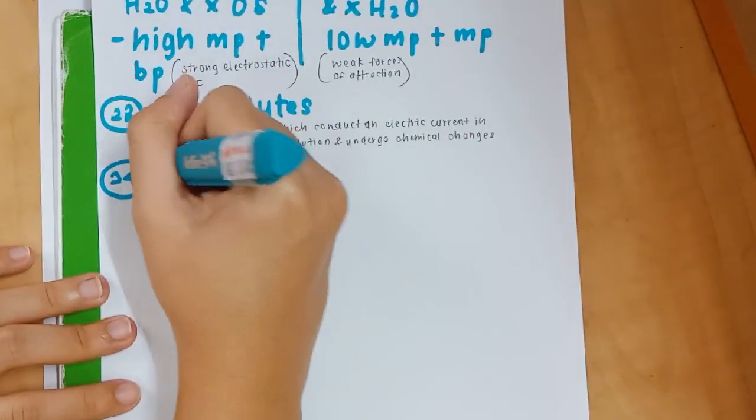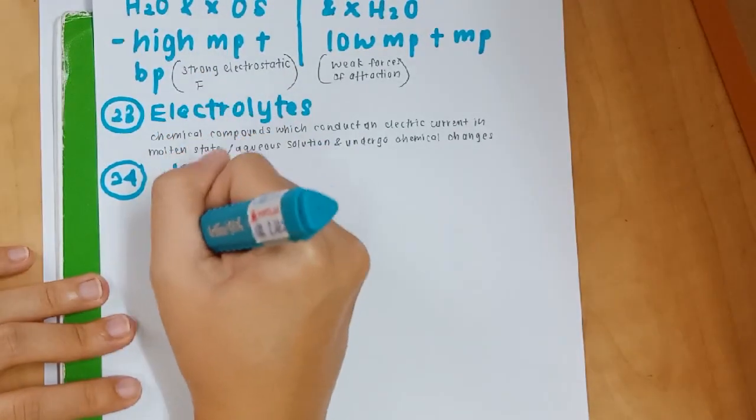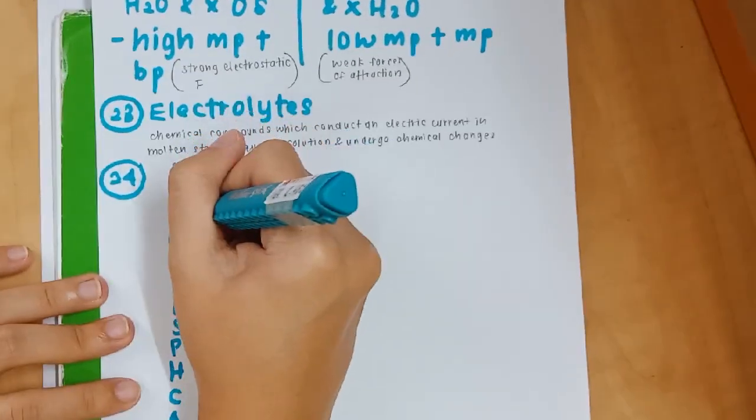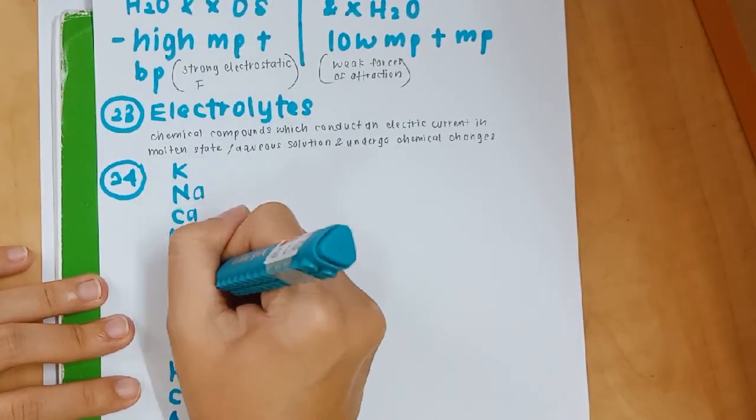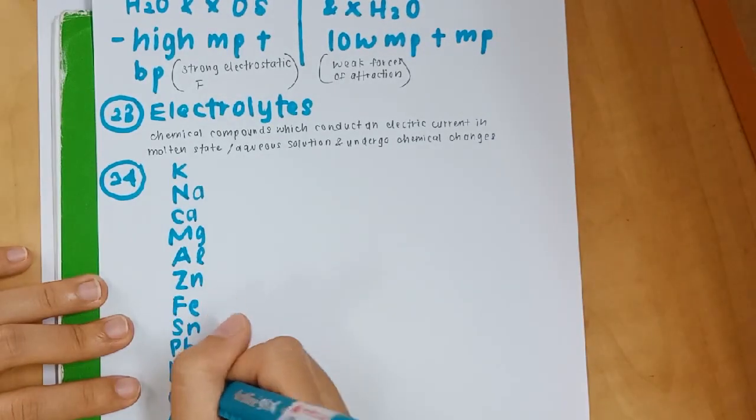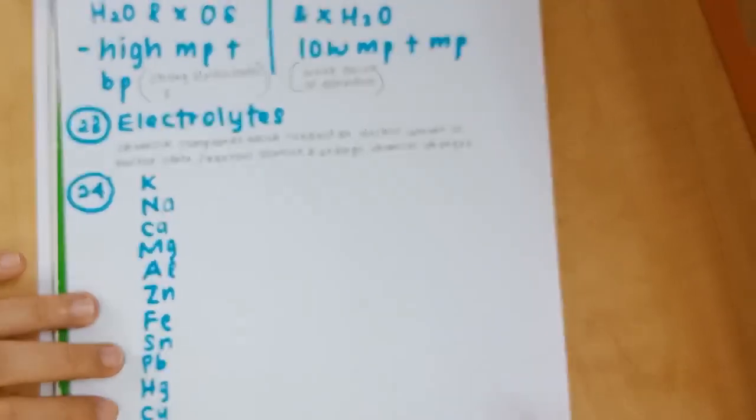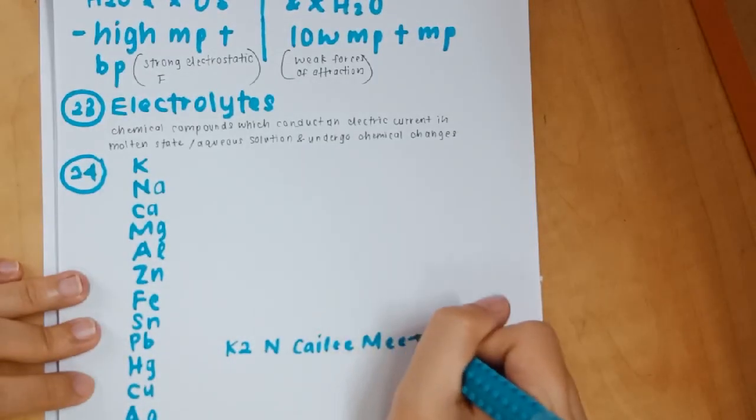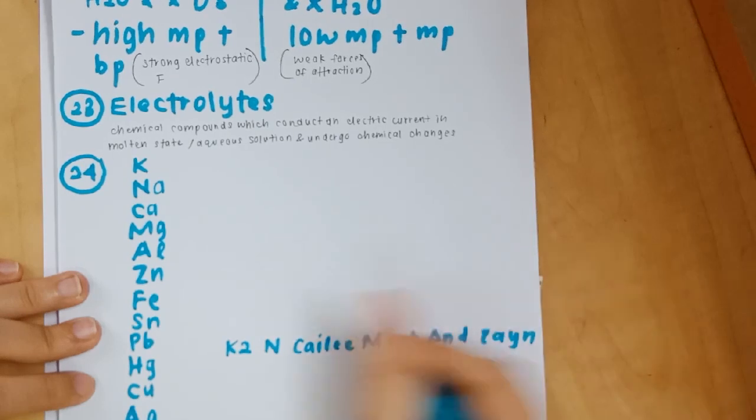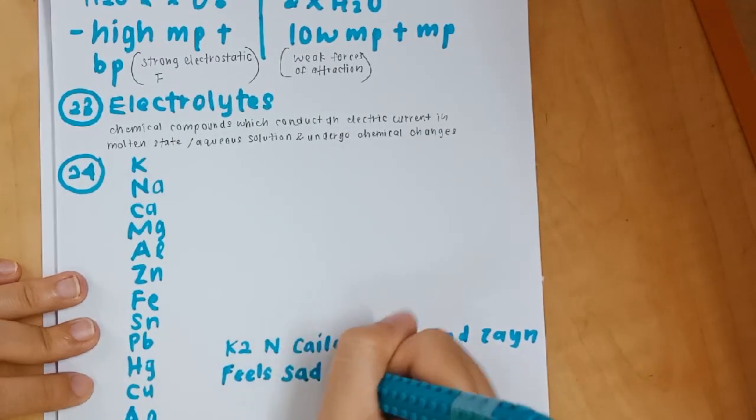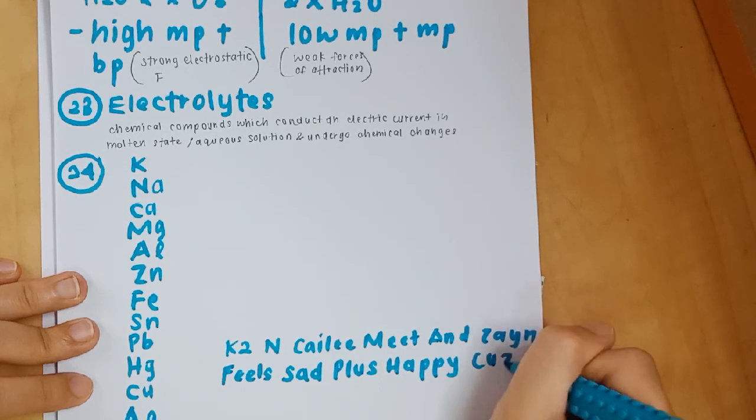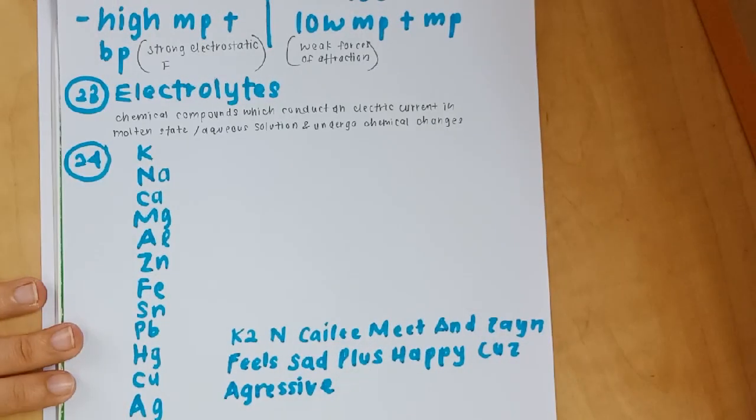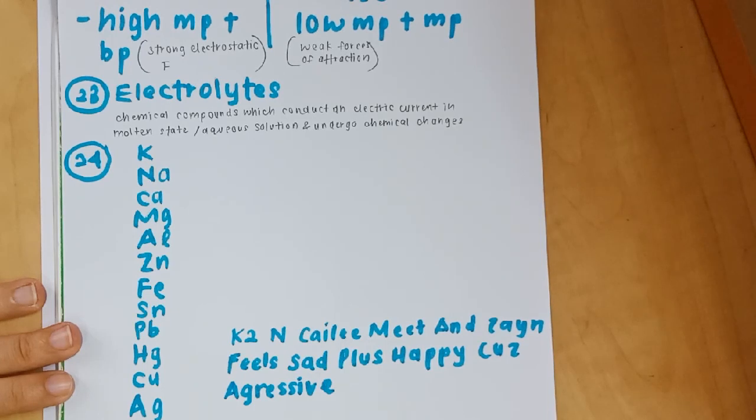Number 24 is the electrochemical series. This is another important thing you should memorize for chemistry. I was just writing this series out of memory. I use the acronym first and then I fill in the blanks. The acronym that I used is: K too and Kelly meet and then feel sad plus happy because aggressive. K too and Kelly are just two of my friends. You can use this acronym if you like, you can create your own as well.